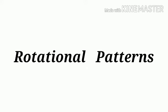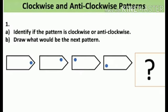Good morning students. Today we will see some more examples of rotational patterns. As we know, rotational patterns may be of two types: first is in clockwise direction, second is in anticlockwise direction. Anti means opposite.